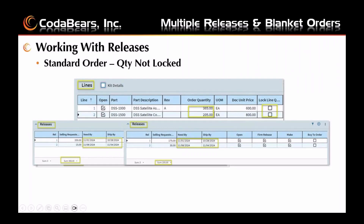Working with a standard order where the quantity is not locked, you'll enter multiple releases with different dates if needed. As you add more releases, the total quantity will increase, and deleting releases will reduce the total line quantity. That behavior is the same for a standard or blanket order if the line is not locked. So here we started with 350 again, but we added 15 — this time it increases to 365 instead of being reduced to 335. If you try to ship the first line, you will not get a warning since the line was not locked.